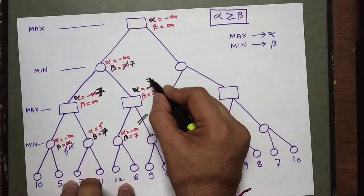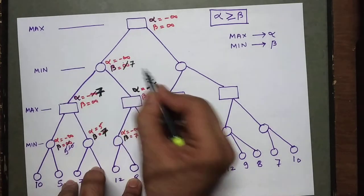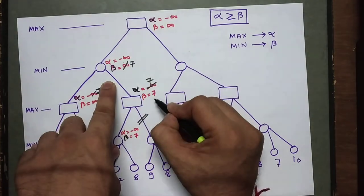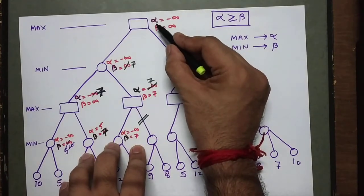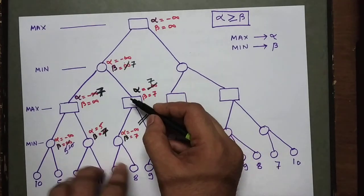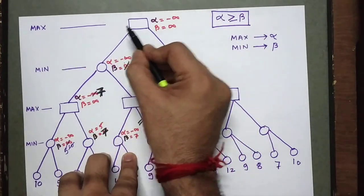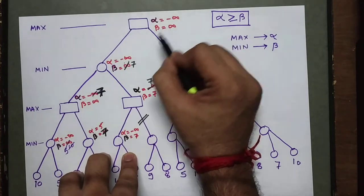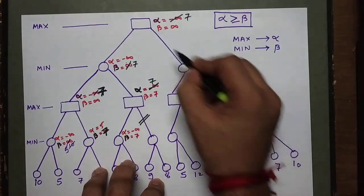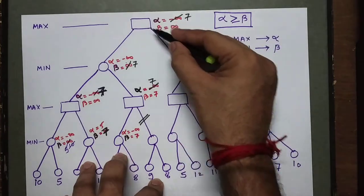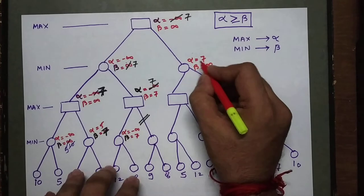Whenever changes happen to a child node they must be reflected to the parent, but values remain the same if there is no update. Moving on to the root node's other branch: the root has alpha=minus infinity and beta=infinity. Since it is a max node, alpha will change. Going to that branch's leftmost child, alpha will be 7 and beta will be infinity — these values get copied down to the child nodes for further calculation.